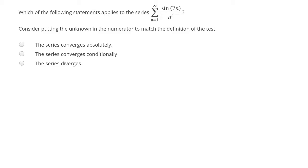Looking at the terms, we see the sine of 7n, and we know sine is going to oscillate between positive values and negative values. So some of our terms in this series are going to be positive, some may be negative. We do not have all positive terms, so it makes sense to look at the absolute value of the terms to see how the series will behave.